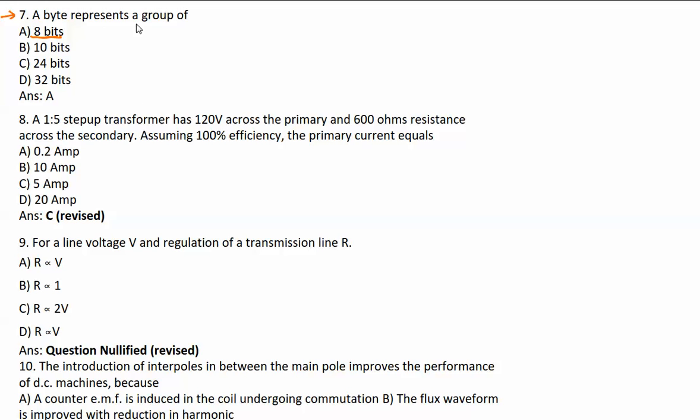Next question: A 1:5 step-up transformer has 120V across the primary and 600 ohms resistance across the secondary. Assuming 100% efficiency, the primary current equals. Let's take this problem - we have one transformer winding and a secondary winding with a resistor of 600 ohms. The primary voltage is 120V in a 1:5 ratio transformer. What will be the voltage of the secondary winding?